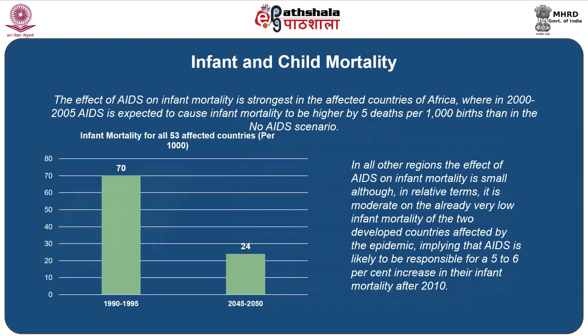Thus, even taking into account the effect of AIDS, infant mortality in all affected countries declined from 70 deaths per 1,000 births in 1990-95 to 24 deaths per 1,000 births in 2045 to 2050 based on projections. The effect of AIDS on infant mortality is strongest in the affected countries of Africa, where AIDS is expected to cause infant mortality to be higher by 5 deaths per 1,000 births than in the no-AIDS scenario. In all other regions, the effect of AIDS on infant mortality is small, although in relative terms it is moderate in the two developed countries affected, implying that AIDS is likely to be responsible for a 5 to 6% increase in their infant mortality after 2010.